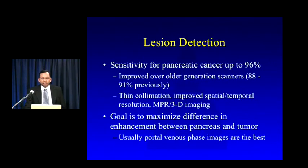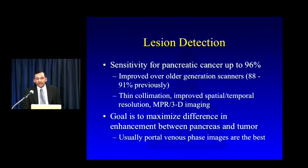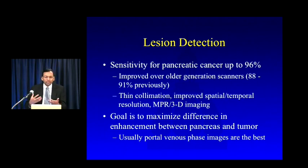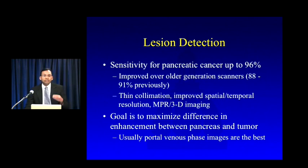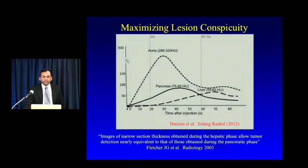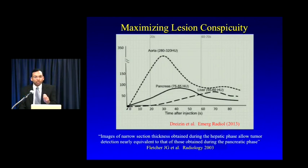CT overall is an excellent modality for pancreatic cancer, with sensitivities up to 96%, largely because of improvements in scanner technology — thin collimation, better spatial and temporal resolution, and increasing use of MPRs and 3D imaging. The goal of a pancreatic protocol is to maximize the difference in enhancement between tumor and native pancreatic parenchyma. The portal venous phase is generally best for identifying pancreatic cancer, though there is a third so-called pancreatic phase at roughly 40 seconds — just after arterial phase but before venous phase — that gives maximal pancreatic enhancement.